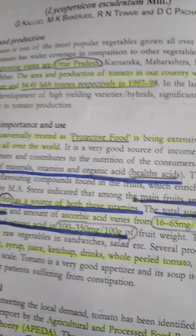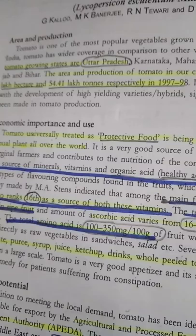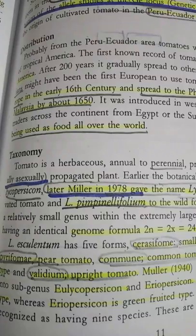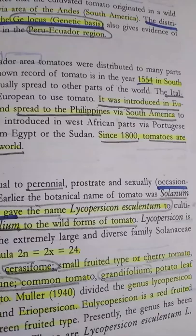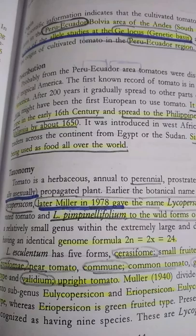Tomato is universally treated as a protective food, as it is extensively cultivated all over the world. 2N equals 24. The classification of tomato into five forms is very important: first is Cerasiforme — small fruited type or cherry tomato; second is Pyriforme — pear tomato; Commune — common tomato; Grandifolium — potato leaf type; and Validum — upright tomato.